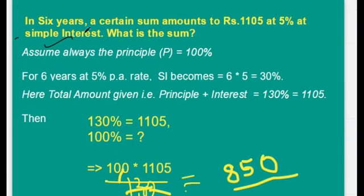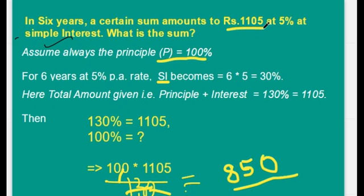See one more example. In 6 years a certain sum amounts to 1105 rupees at 5% simple interest. What is the sum? We have to calculate the principal amount. Simple interest equals 6 years × 5% = 30%. The total amount given is 1105 rupees, which equals principal plus interest, that is 100% + 30% = 130%. So 130% equals 1105 rupees.